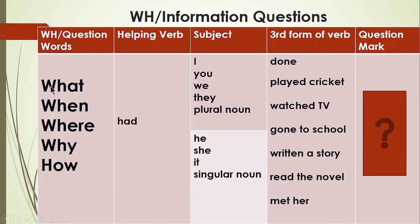For WH questions, the structure is: WH word (what, when, where, why, how) + had + subject + third form + rest of sentence + question mark. For example: 'What had you done?' 'When had you played cricket?' 'When had they watched TV?' 'Where had she written a story?' 'Why had she read the novel?' There is also another type of WH question made with 'which' or 'what' followed by an object: 'Which book had you read?' 'Which movie had you watched?' 'What novel had you studied?' 'What game had you played?'